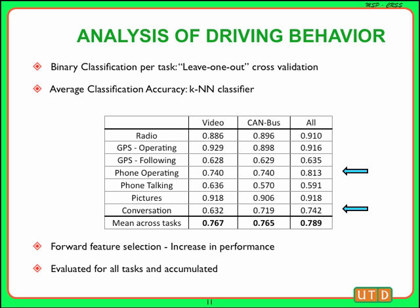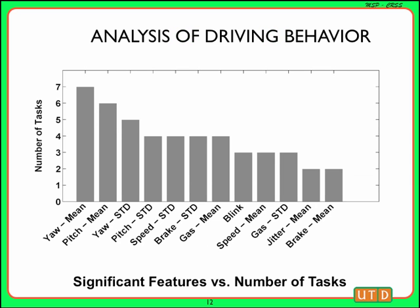Overall, across all tasks, using a combination of the features improves the classification accuracies by around 2.2%. As a consequence of the forward feature selection process, we determined the significant features for each task. This figure shows for how many tasks a particular feature is significant in distinguishing between normal and task driving behavior. As can be seen, yaw mean is again a very important feature, as it was significant for all seven tasks.